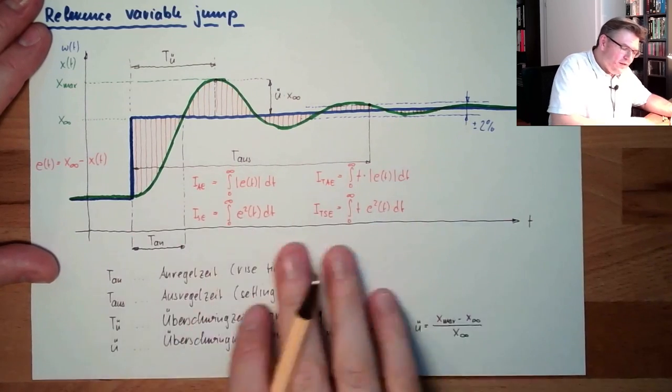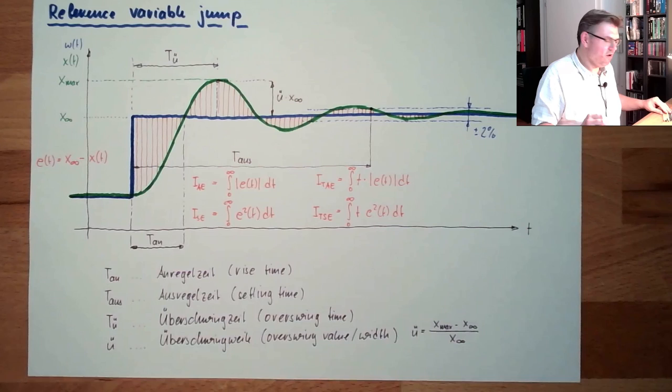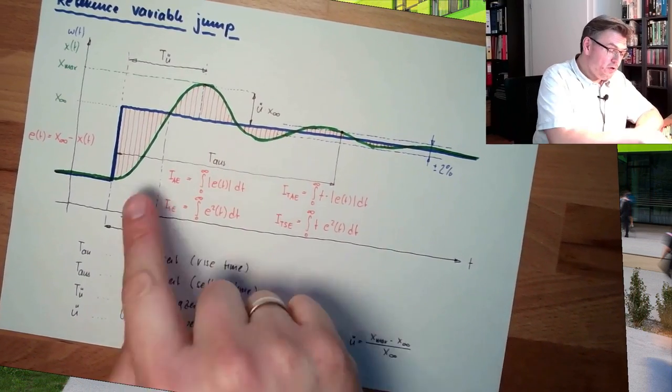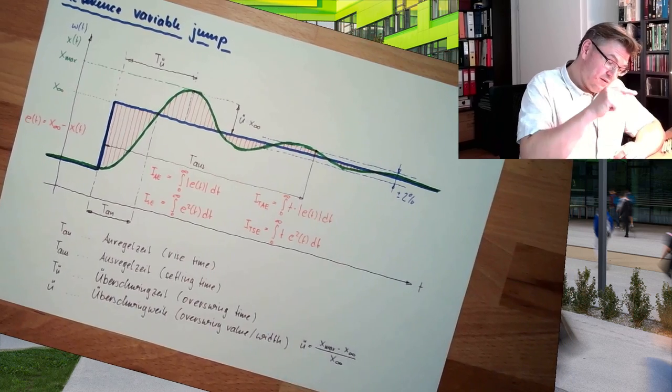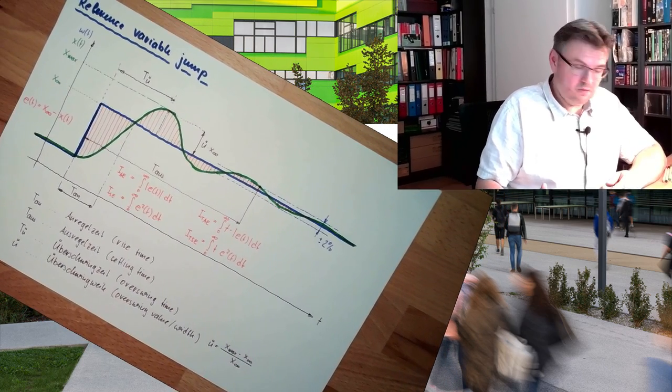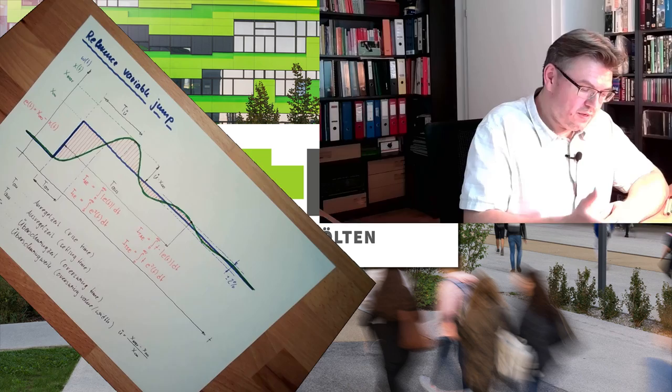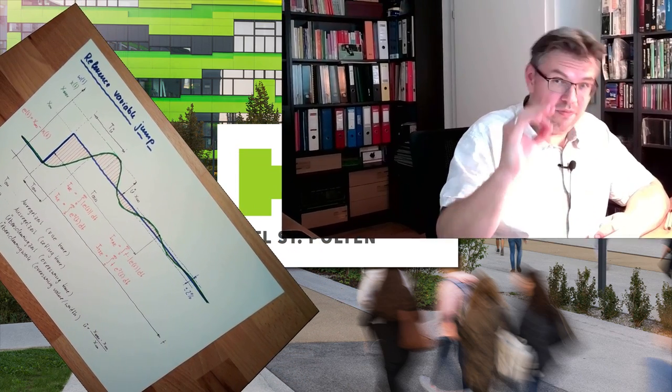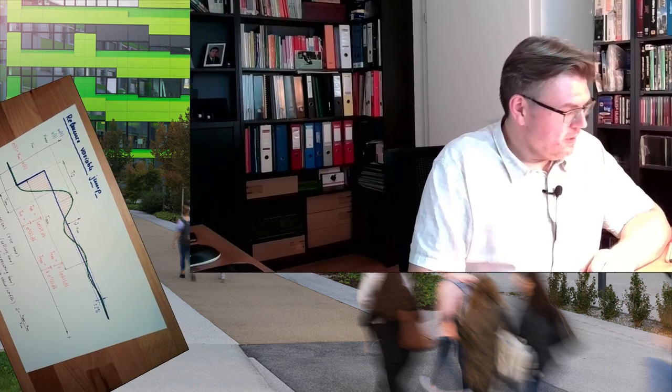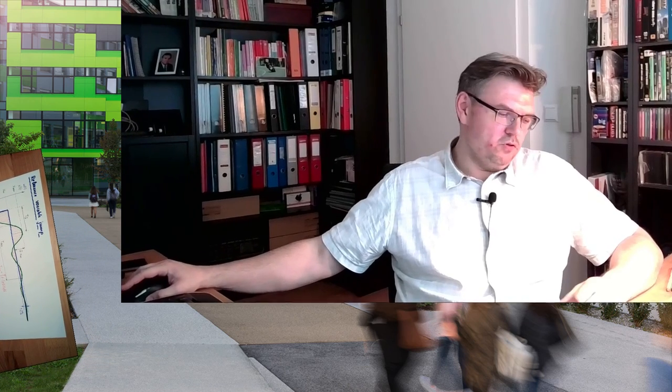Those are typical error integrals, typical numbers which show how is the quality of the controller. And depending on your case, if this and that error is more severe or not, you can select one. What is common for all of them? The higher the number, the uglier the control is. And so you can compare two different adjustments and say if this is better or not. Really, with a number, and not just by telling, oh, looks good. Here, proof. So this is some quality criteria. Integral quality criteria, integral because you're summarizing simply the error.